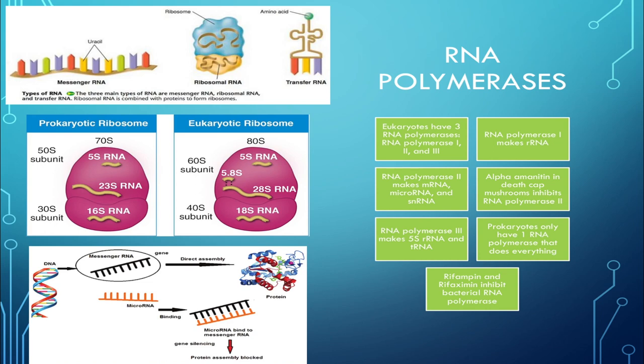To sum up: eukaryotes have three RNA polymerases while prokaryotes have one, and we use these differences to create drugs that can kill prokaryotes without affecting us too much. RNA polymerase 1 makes rRNA; RNA polymerase 2 makes mRNA, microRNA, and snRNA; RNA polymerase 3 makes 5s rRNA as well as tRNA.